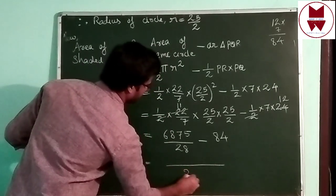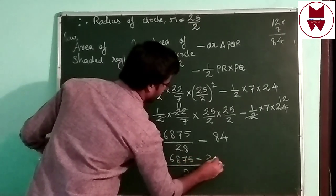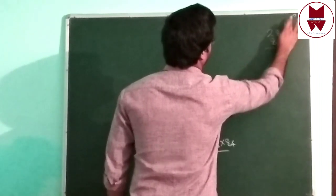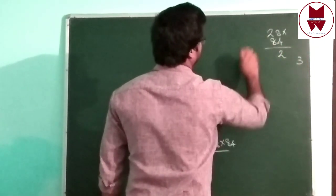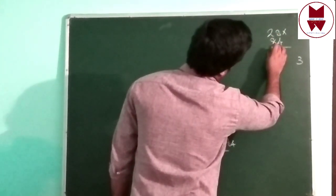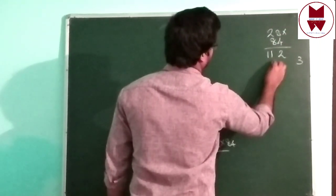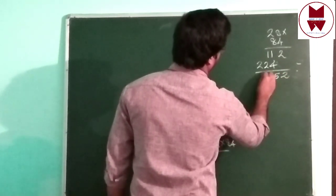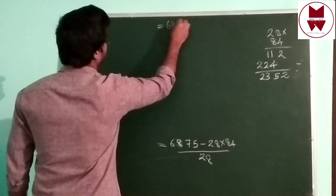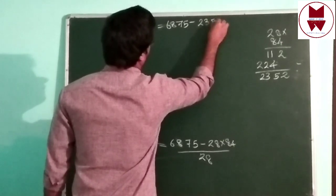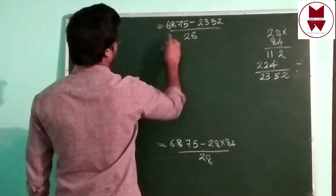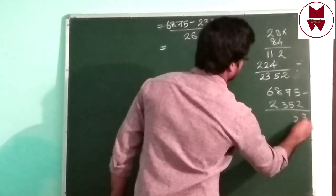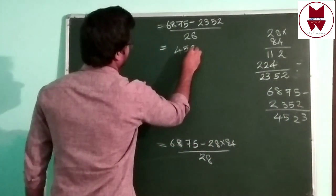After computing with LCM 28: 28 × 84 = 2352. The result simplifies to give the final area of the shaded region in square centimeters.